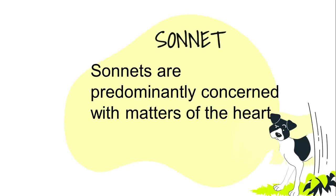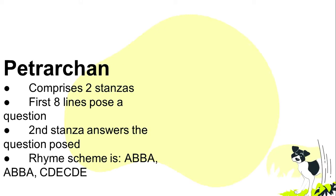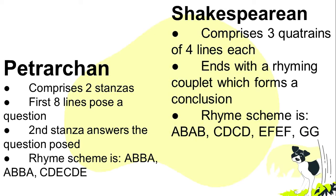Sonnets are predominantly concerned with matters of the heart. If you see a sonnet's recognizably blocky form on a page, there's a good chance the theme will be love. There are two common forms of the sonnet: the Petrarchan and the Shakespearean sonnet. They differ slightly in their internal structure, but both have 14 lines. The Petrarchan sonnet comprises two stanzas — the first eight lines pose a question, and the second stanza answers the question posed. It has a rhyme scheme of ABBAABBA CDECDE. The Shakespearean sonnet comprises three quatrains of four lines each, ends with a rhyming couplet which forms a conclusion, and the rhyme scheme is ABAB CDCD EFEF GG.